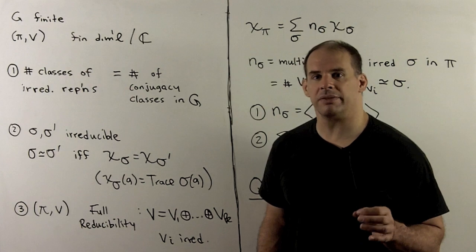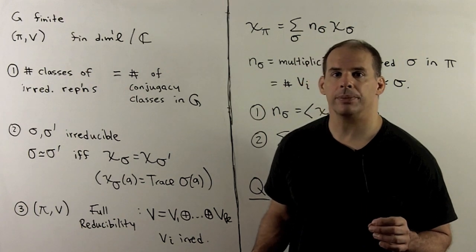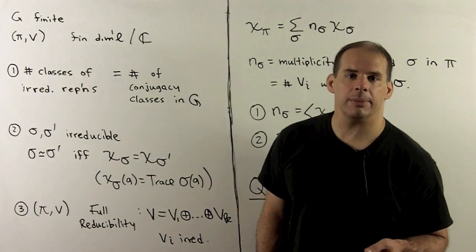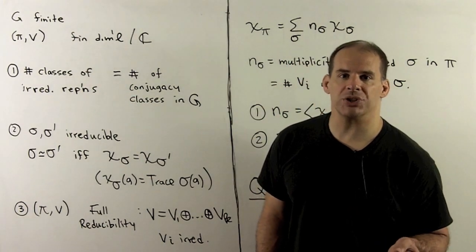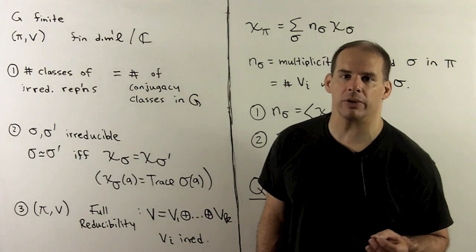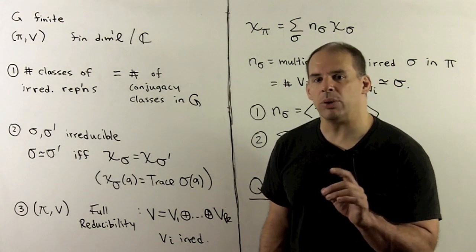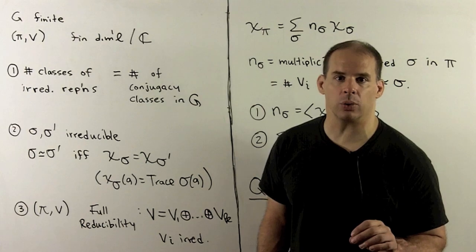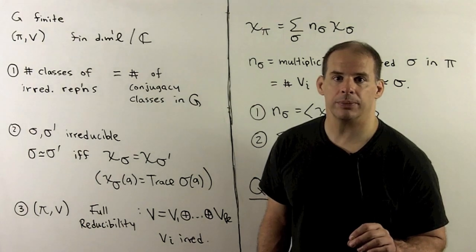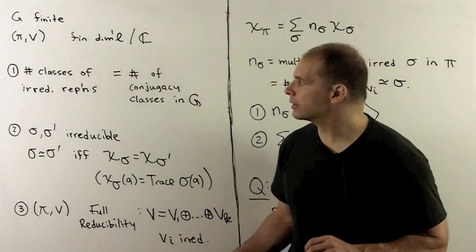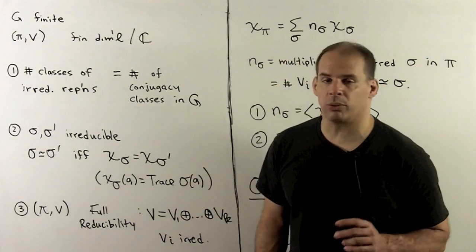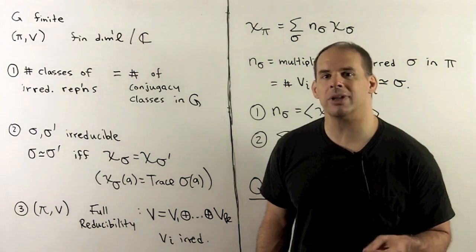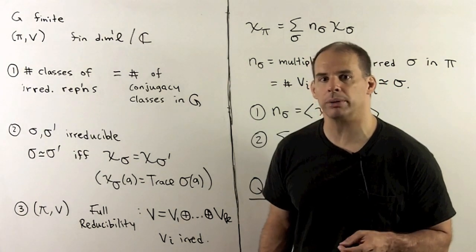We will recall highlights from the previous part. We have G a finite group, pi V is a unitary representation of G over the complex numbers, and we arrive at some main results for representations of finite groups. First, the number of classes of irreducible representations is equal to the number of conjugacy classes in our group.